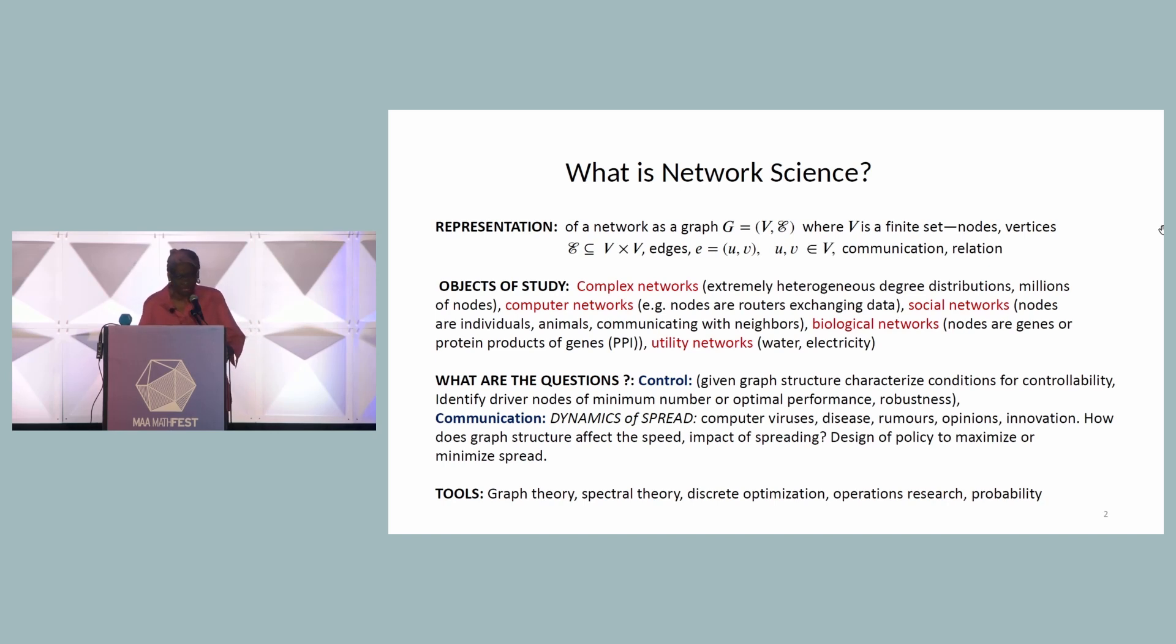What are the questions of network science? Well, an important question is control. That is, given the graph structure, can this network be controlled? And if so, what are the agents that control it? If we have controlling nodes in the network graph, can we minimize the number of controlling or driver nodes? Another related question to control is robustness. So, for example, if a network experiences some interruption, can normal operations in some way continue despite that interruption?